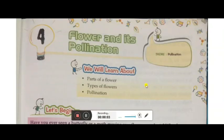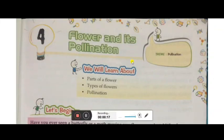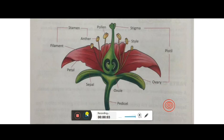Hello children, hope you all are fine. Here is your science teacher and I'm going to teach you your first chapter of your syllabus, that is 'Flower and its Pollination.' In this chapter we will learn about parts of a flower, types of a flower, and the third topic is pollination. Now one by one we are going to elaborate on each of these.